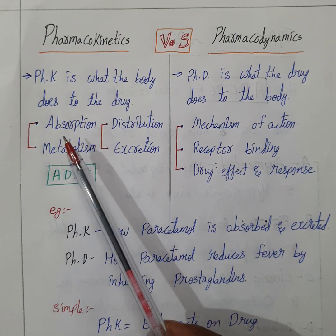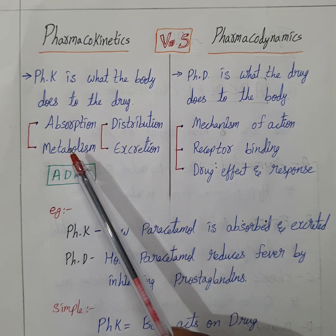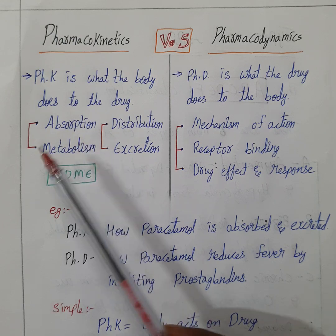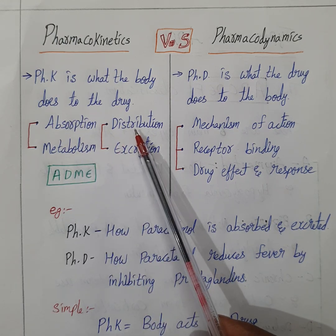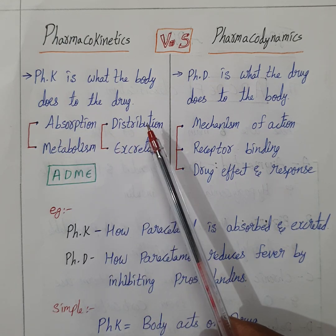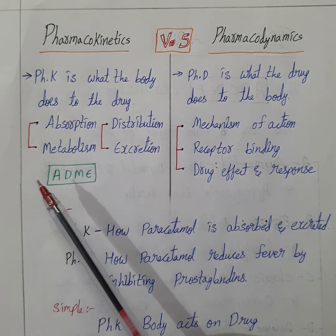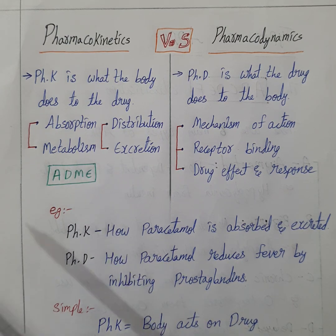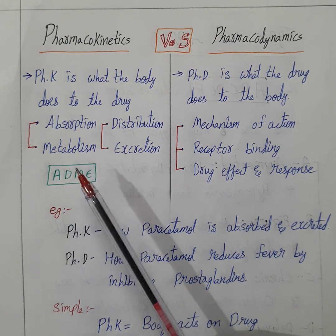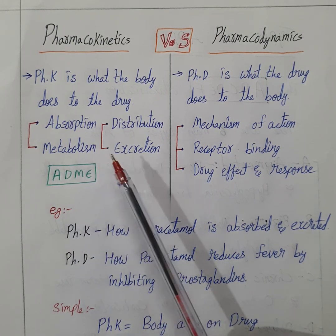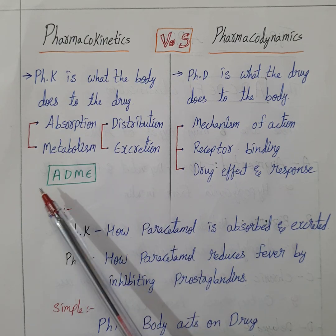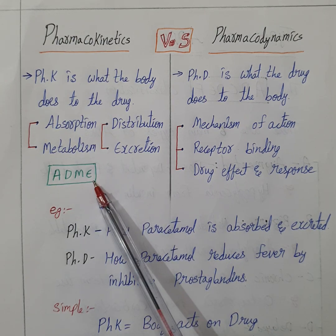Pharmacokinetics includes absorption, distribution, metabolism, and excretion. Absorption means how the drug enters the bloodstream. Distribution means how the drug spreads throughout the body. Metabolism means how the body breaks down the drug. Excretion means how the drug is eliminated from the body. So remember the mnemonic ADME.